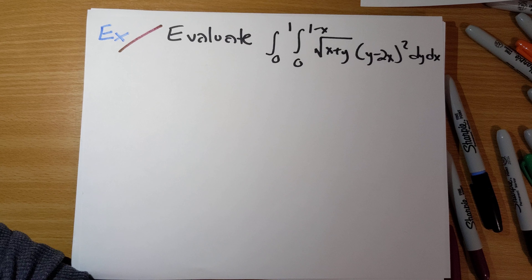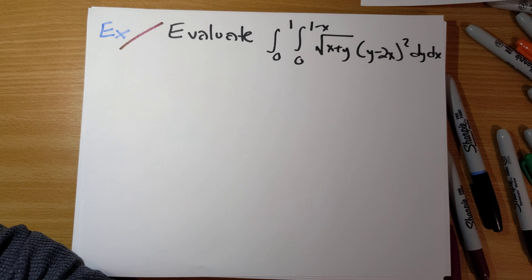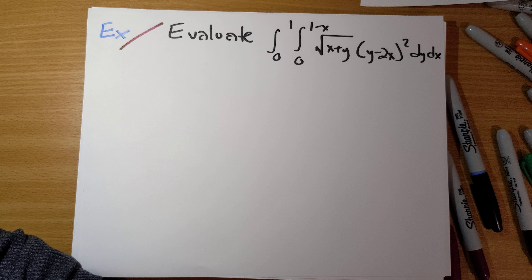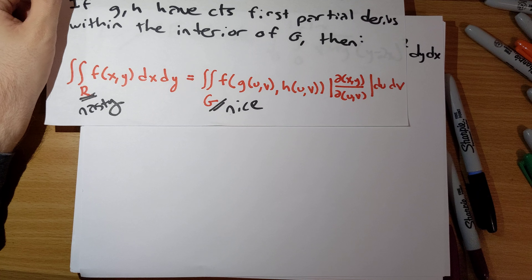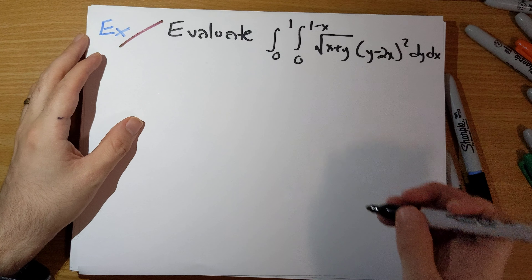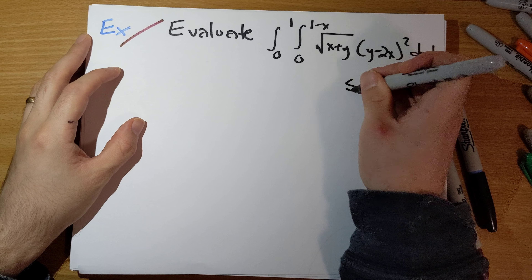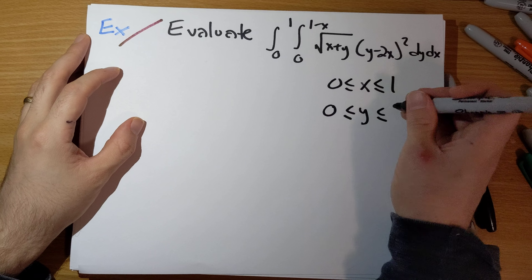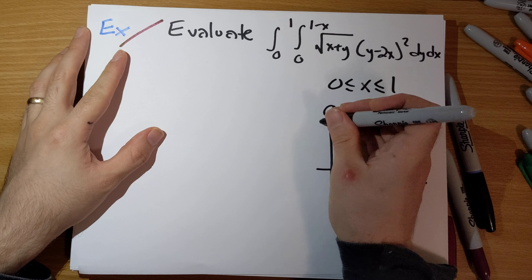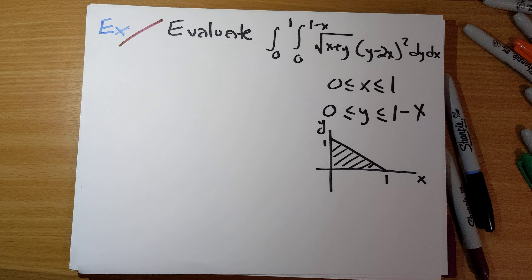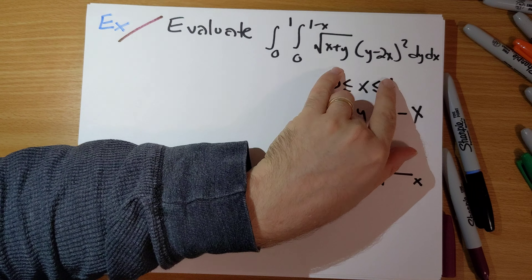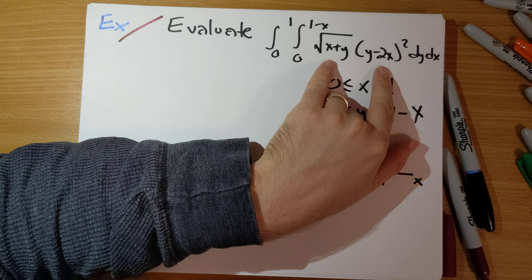Let's look at this example. The integral has x running from 0 to 1, and y running from 0 to 1 minus x, with a rather nasty-looking integrand. This example is going to break the nasty-and-nice paradigm a little bit. The region we're integrating over — where x runs from 0 to 1 and y from 0 to 1 minus x in the xy-plane — is this triangle here. It is a very easy region to integrate over. However, the cost is that this version has a kind of nasty-looking integrand.